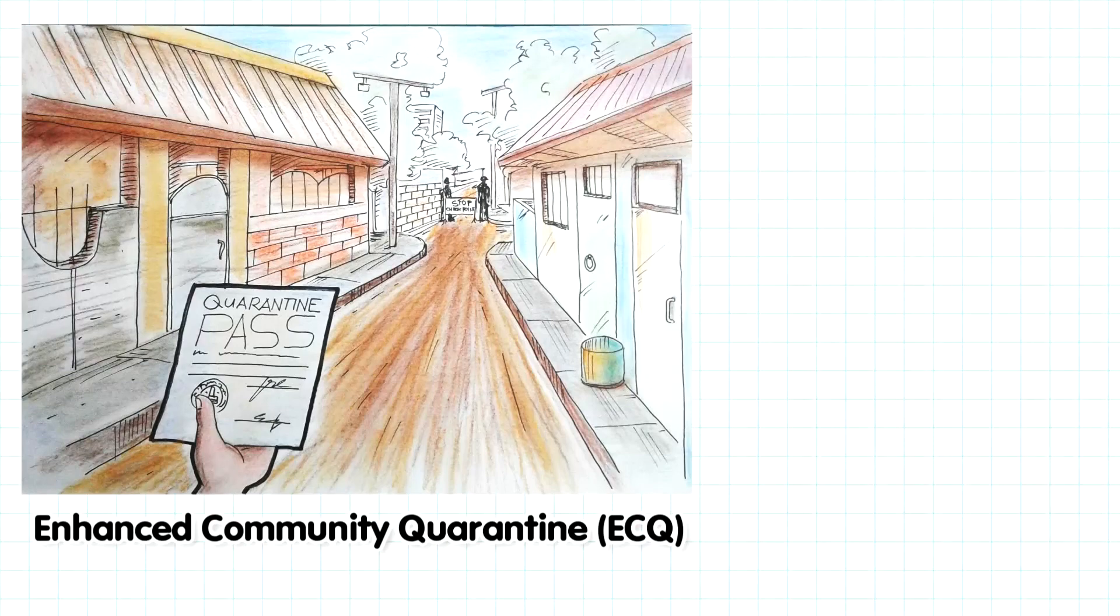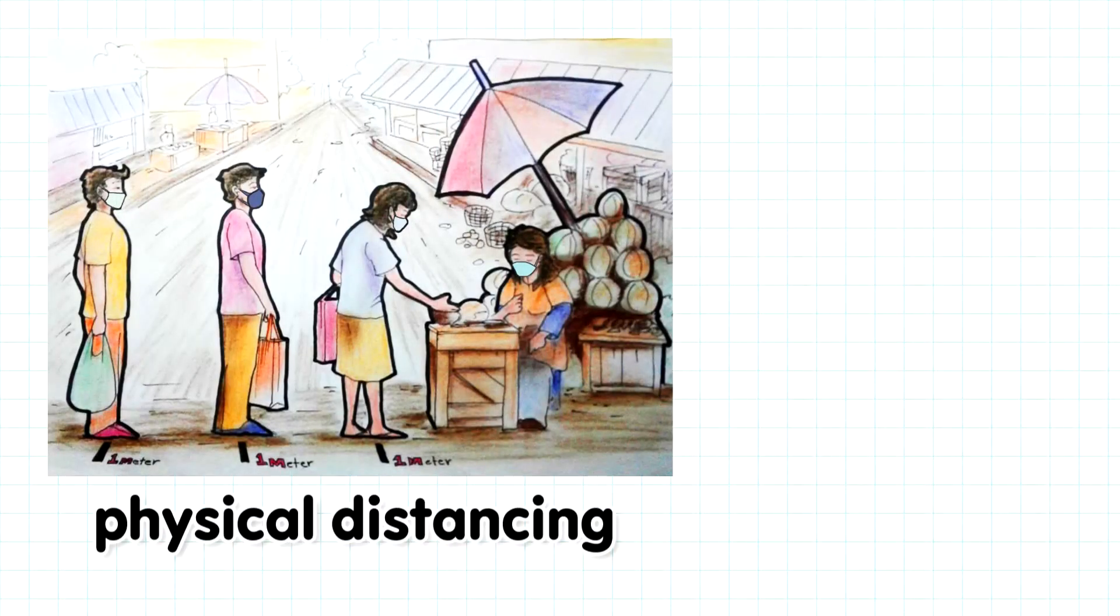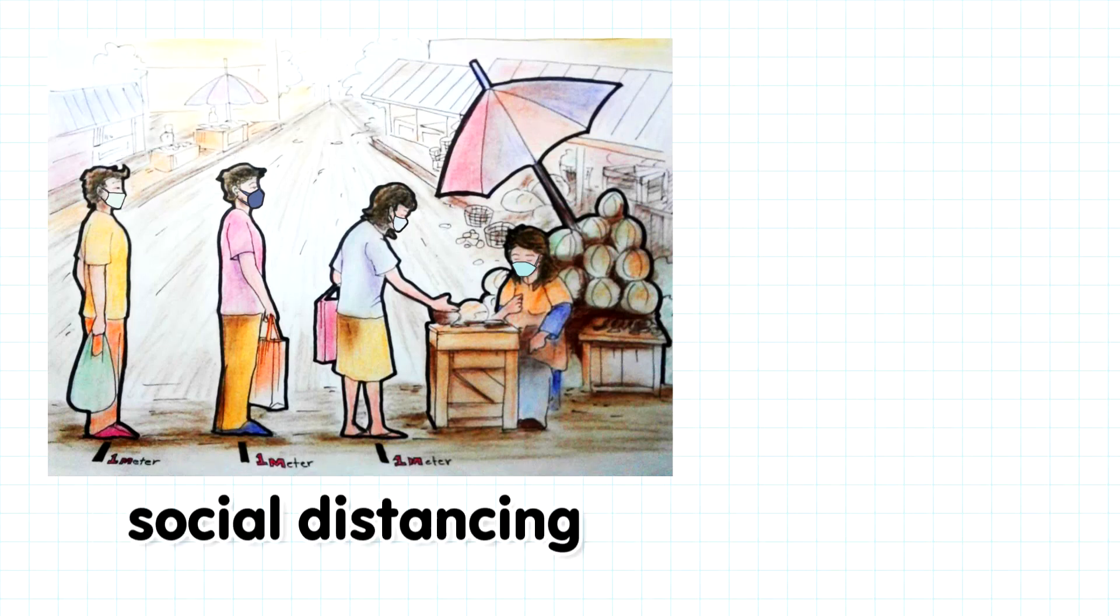We can go out to buy the things we need, but we must have a quarantine pass. And once we're outside, there's a need for physical distancing. They say there should be a space of at least one meter between two people so that if ever one coughs or sneezes, the saliva won't reach you. This is also called social distancing.